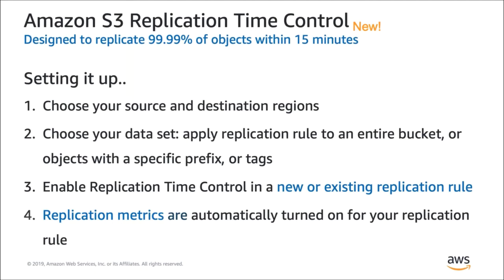Next, you want to decide what dataset to replicate — whether you want to replicate an entire bucket, a prefix, a tag, or a combination of these. Once you've chosen your dataset, you can enable replication time control. You can set up either a new replication rule with replication time control or add it simply to an existing rule. Once you enable this feature, you will begin to see replication metrics for each of your rules. We'll look at what a basic replication configuration looks like, then what it looks like when you enable replication time control on your policy, and finally follow up with a demo on the S3 management console.